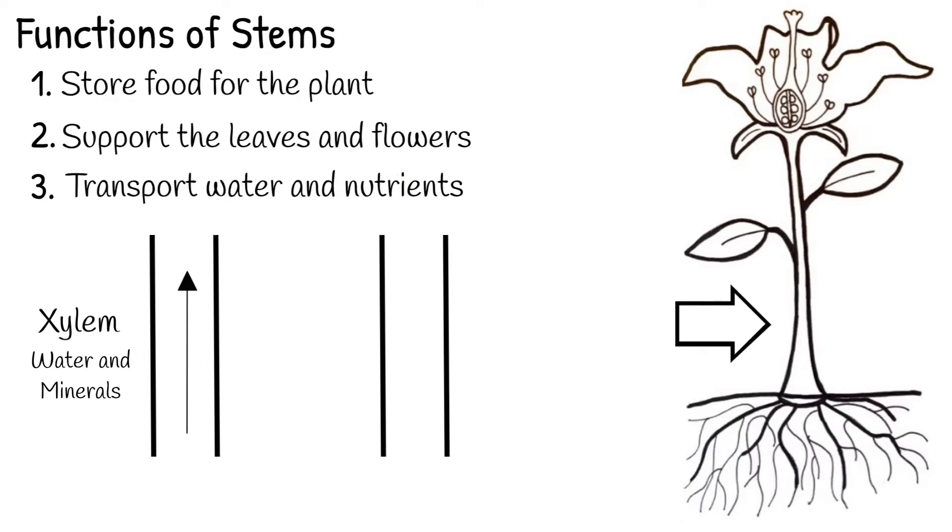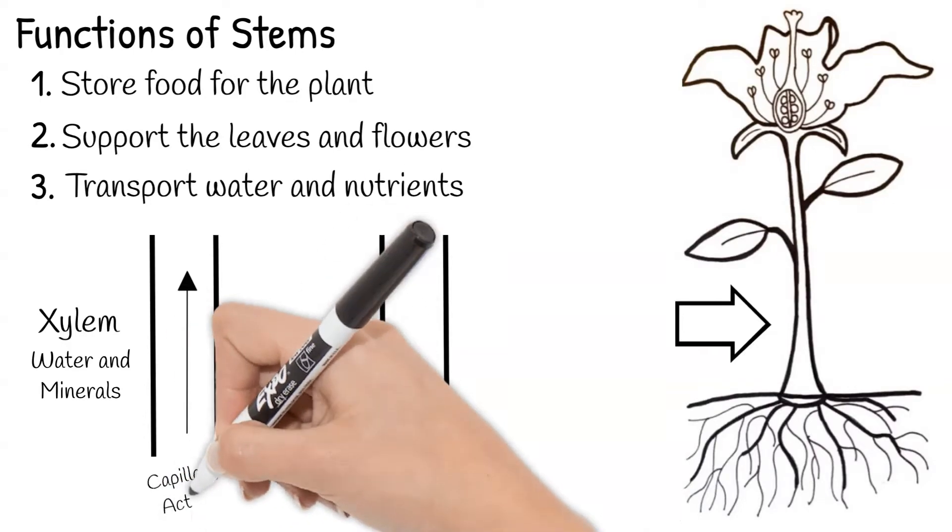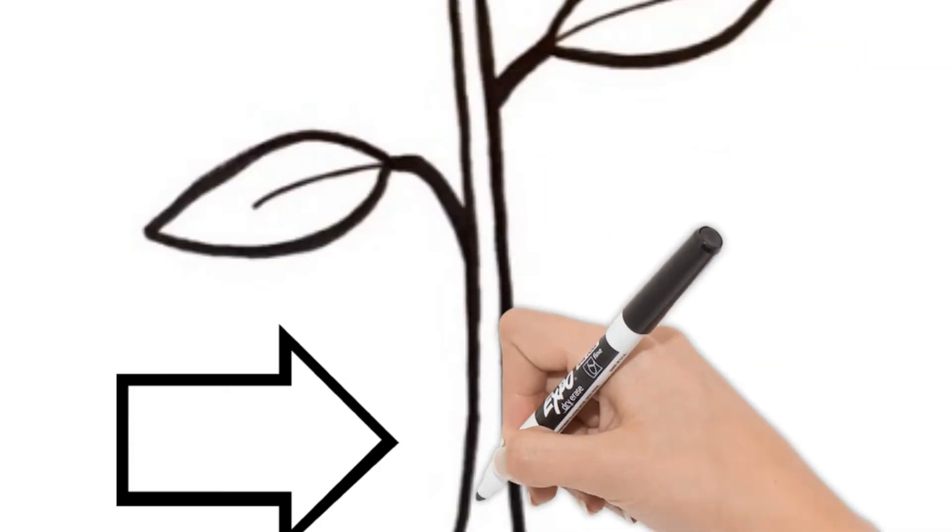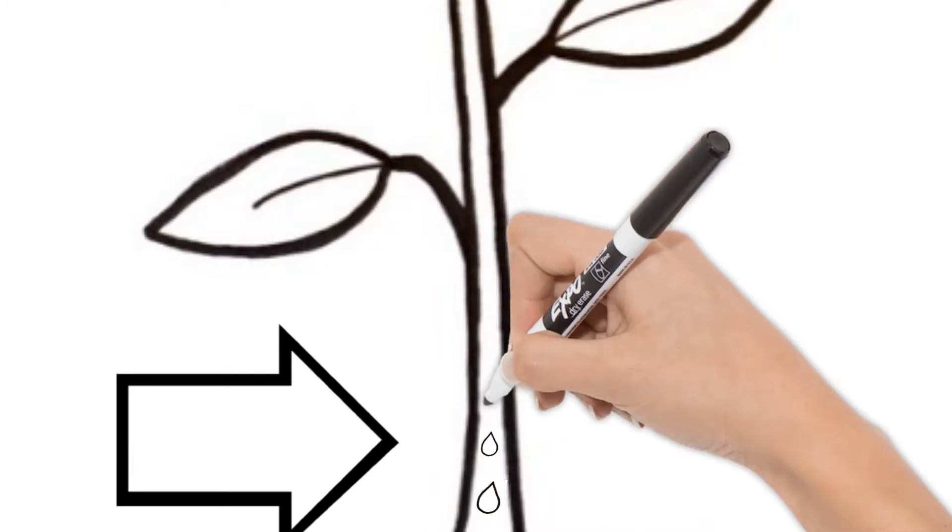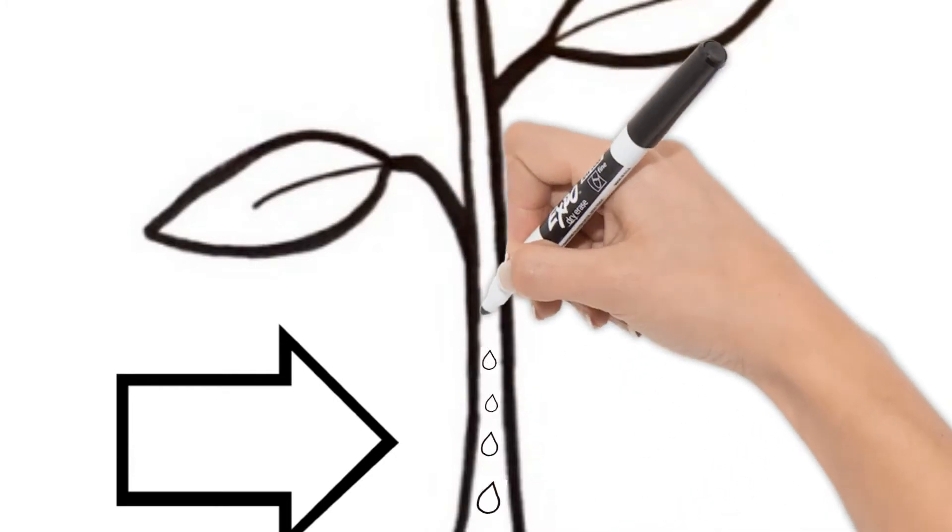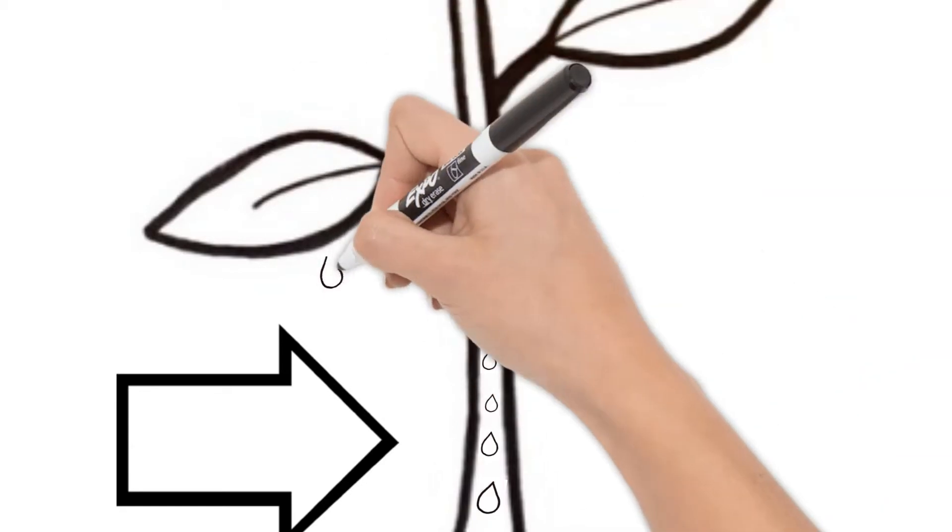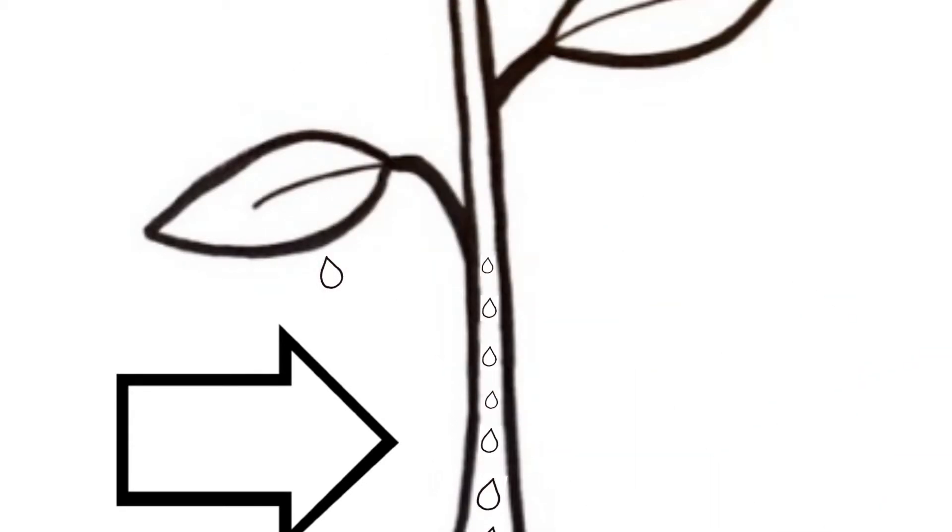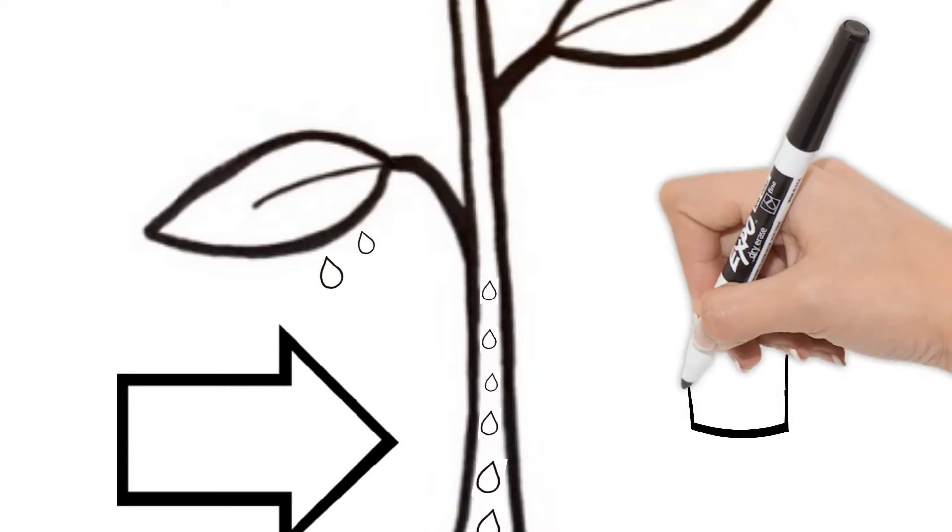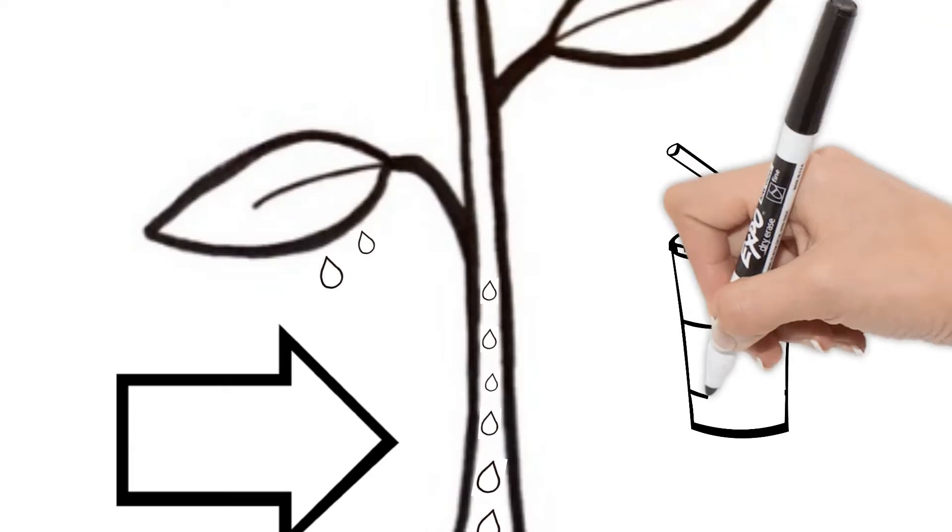The water and minerals travel up the stem because of capillary action. Water molecules are attracted to each other as well as to the sides of the xylem. As water evaporates through the plant's leaves, this pulls the next water molecule up which pulls on the next one and so forth. Kind of similar to drinking out of a straw.